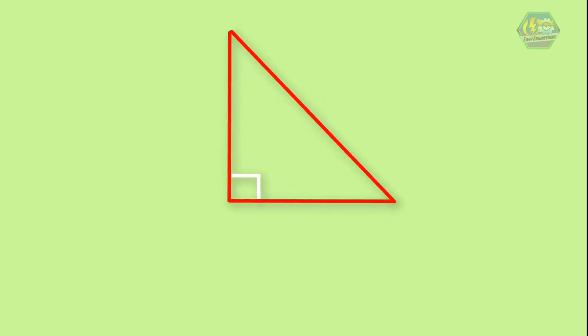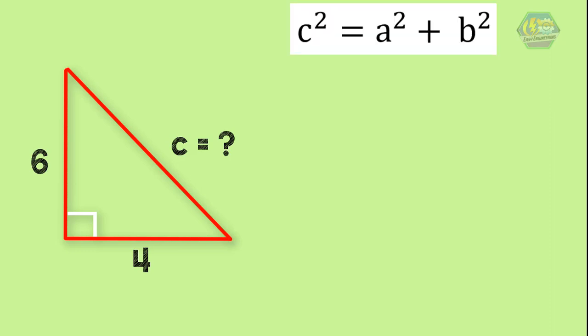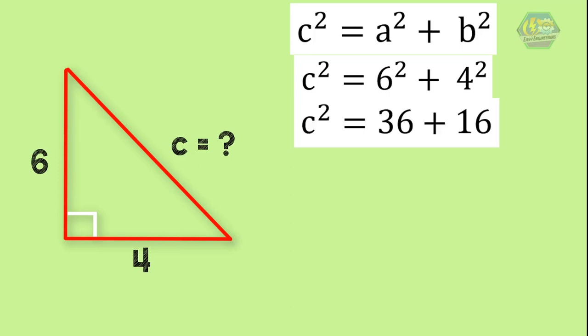Now let's take this example. If you have a right triangle whose sides are equal to four and six, find the hypotenuse. As we can see, side c is the hypotenuse, so we can use the Pythagorean theorem: hypotenuse squared equals the sum of the squares of the two sides. The equation becomes c² = 6² + 4². Six squared means six multiplied by itself, and four squared means four multiplied by itself. Therefore the equation becomes c² = 36 + 16.